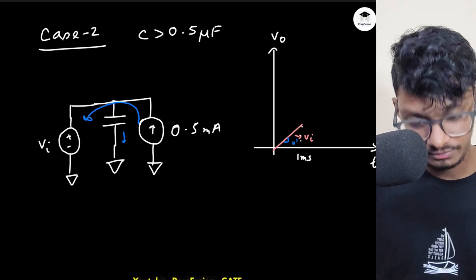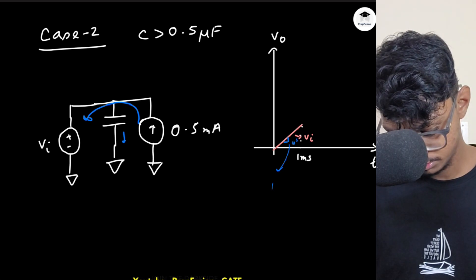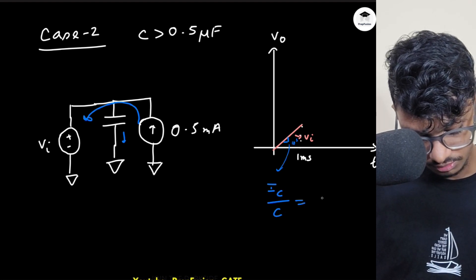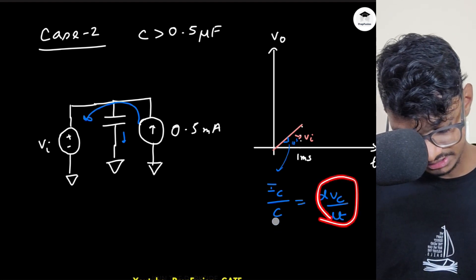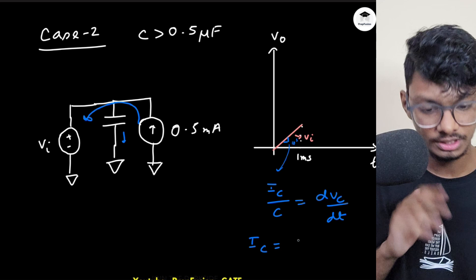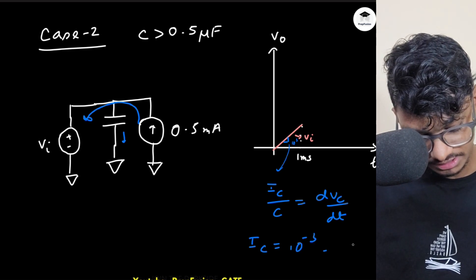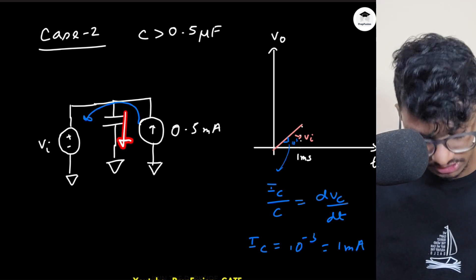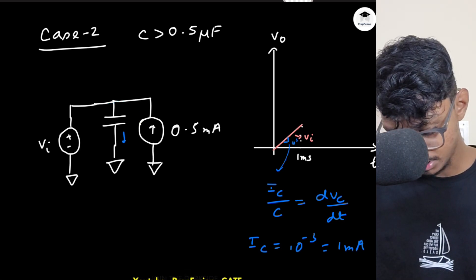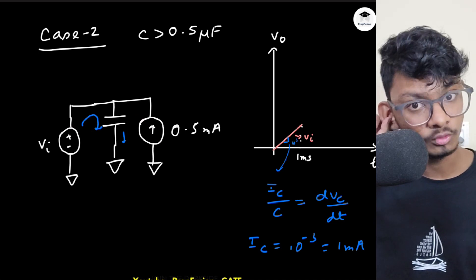Since dV_C/dt = 10³ and i_C = C × dV_C/dt, with C = 1 microfarad the capacitor current is 1 milliamp. The current source provides 0.5 mA, so the extra 0.5 mA is provided by the voltage source. In total: current source supplies 0.5 mA and the voltage source supplies the additional 0.5 mA to the capacitor.